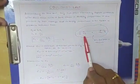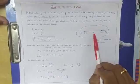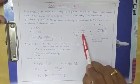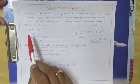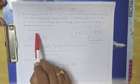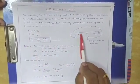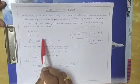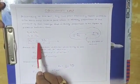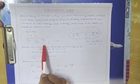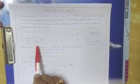Consider these two charges, plus Q1 and plus Q2, separated by a distance R. Both being positive charges, they will repel each other. This force is directly proportional to the product of their charges and inversely proportional to the square of distance between them. Combined, this becomes F = (1 / 4πε₀) · Q1Q2 / R², where 1/4πε₀ is a constant.